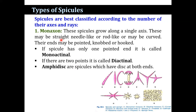The first type is monaxon. These spicules grow along a single axis and may be straight or needle-like, rod-like, or curved. The ends may be pointed, knob-shaped, or hook-like. When a monaxon has one pointed end, it is called monactinal monaxon. When both ends are pointed, it is known as diactinal monaxon. Amphi-disc spicules have a disc present on each of their ends.